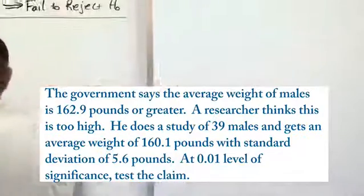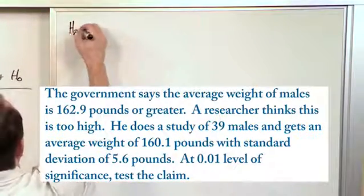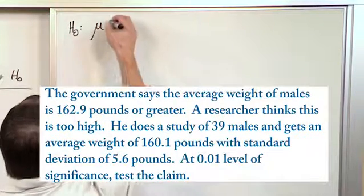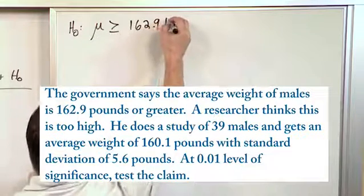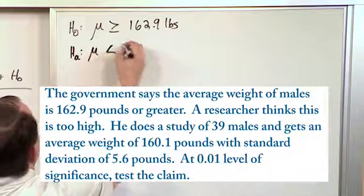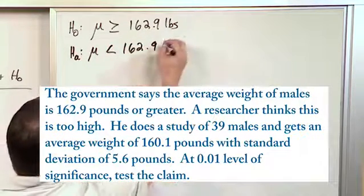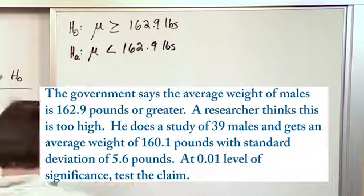So the first step is, let's write down the null hypothesis. It is a mean, the average weight, right? And the government says that it's greater than or equal to 162.9 pounds. And so therefore, the alternate must be the opposite of this, less than 162.9 pounds. So greater than or equal to this, less than that. These are opposites of one another.